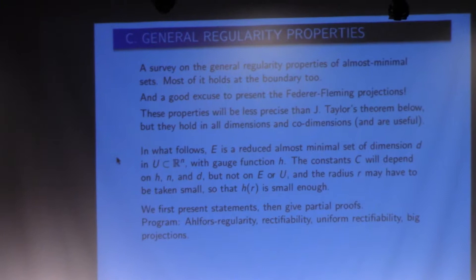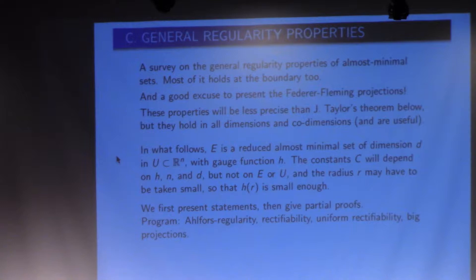Most of the regularity results are true including at the boundary — which was my initial goal — but the proofs are easier when you're far away from the boundary, so I will now consider myself far from the boundary. The list of results is: Ahlfors regularity, rectifiability, uniform rectifiability, big projections, and then we'll talk about limits.